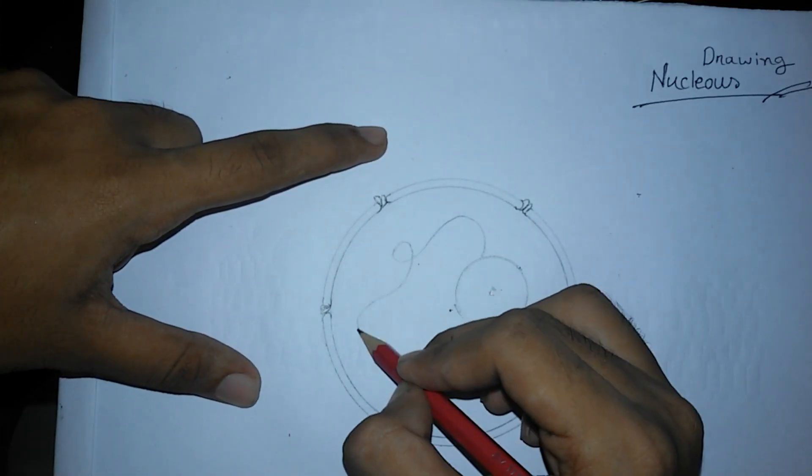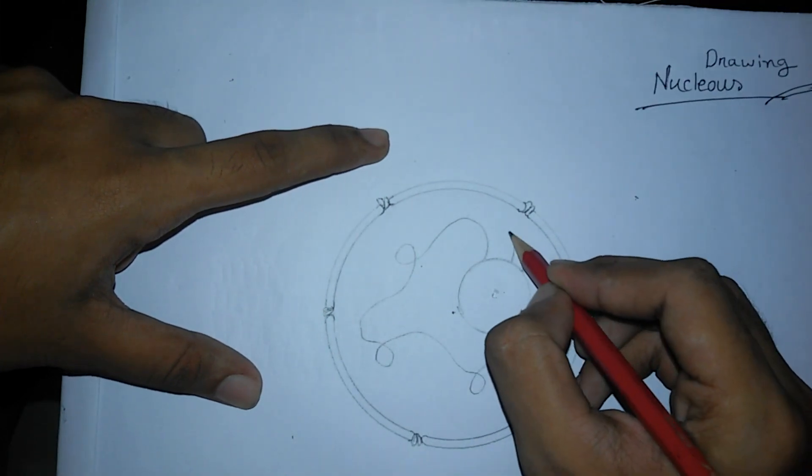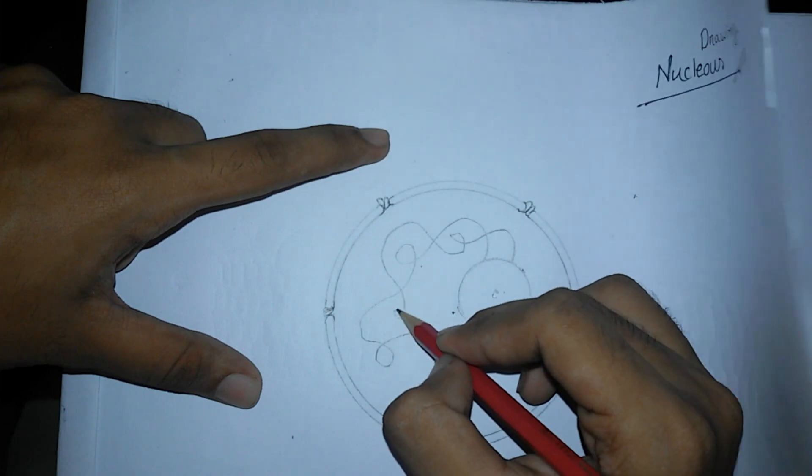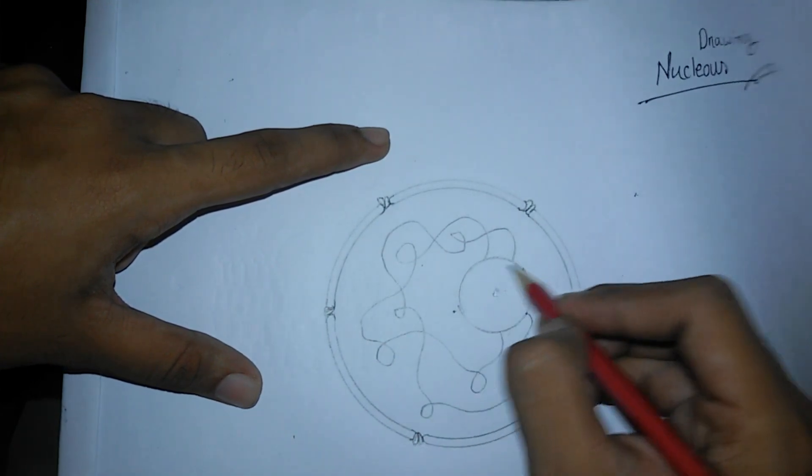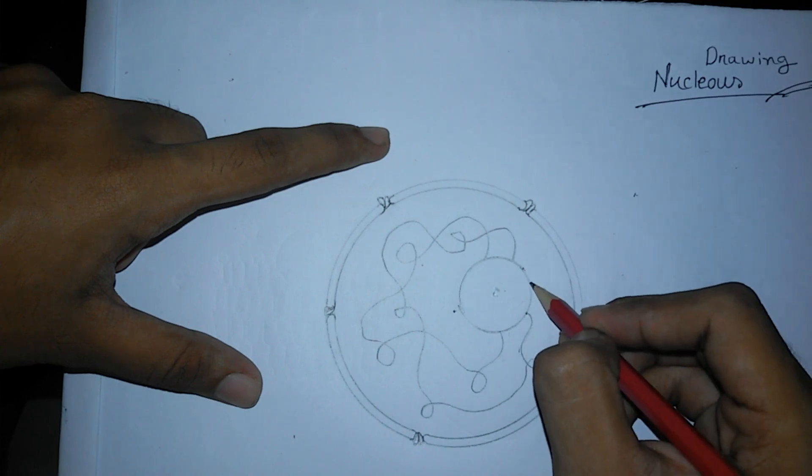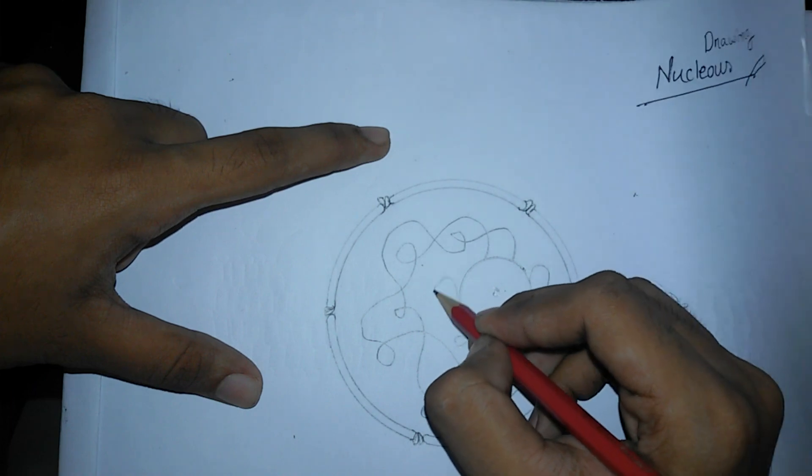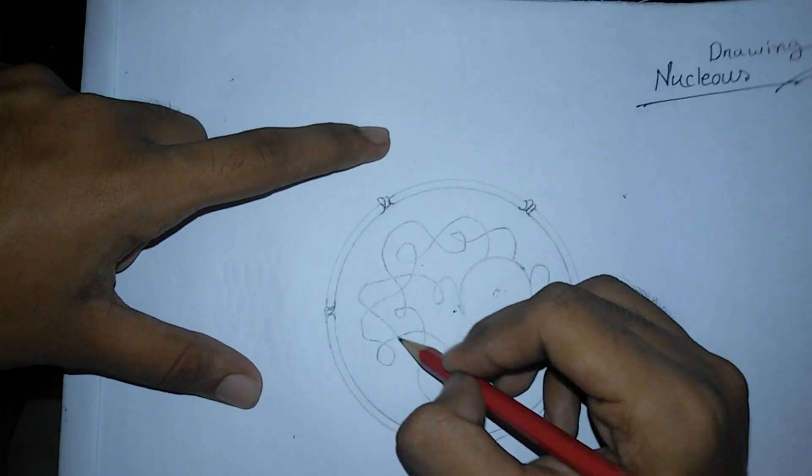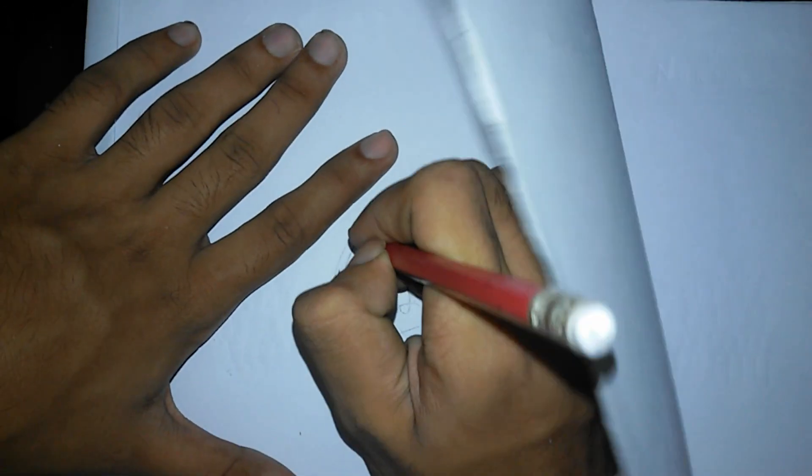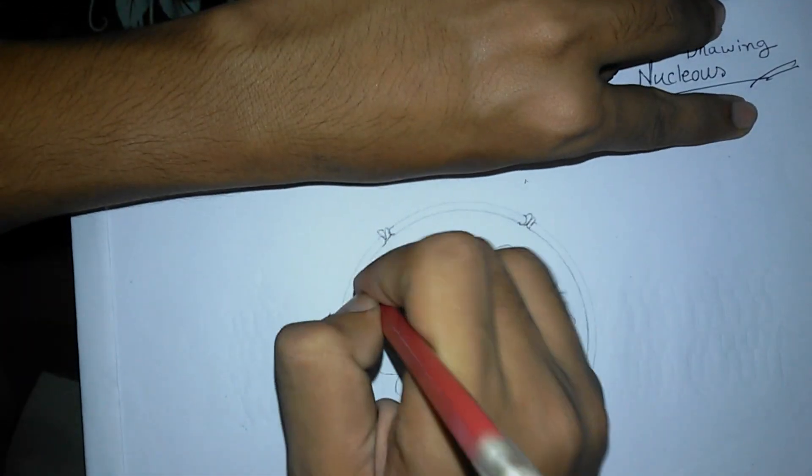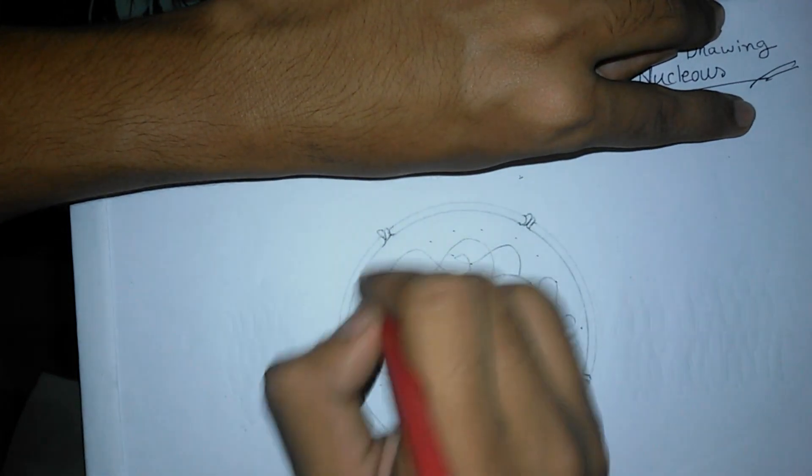Then I have to add the chromatin like this, randomly as you wish, giving this in this style. Let me add chromatin in here and in here. I hope this is enough.